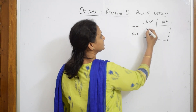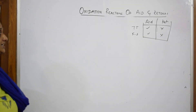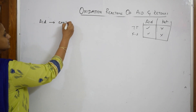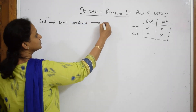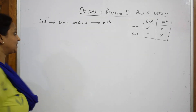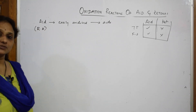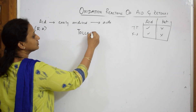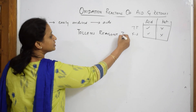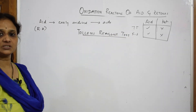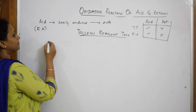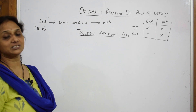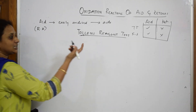Aldehydes respond to Tollens' test and Fehling's solution test; ketones will not respond. When we do the Tollens' reagent test, aldehydes can be easily oxidized to acids, so they are better reducing agents — they reduce the Tollens' reagent. This test is also called the silver mirror test. We prepare a freshly prepared Tollens' reagent in the lab so that you get the silver mirror.